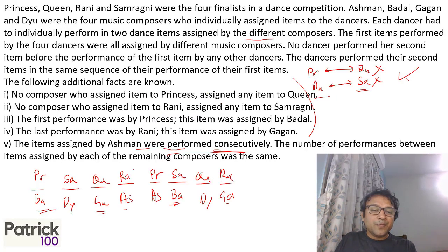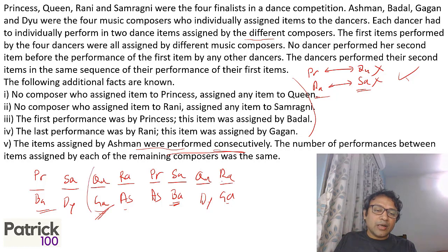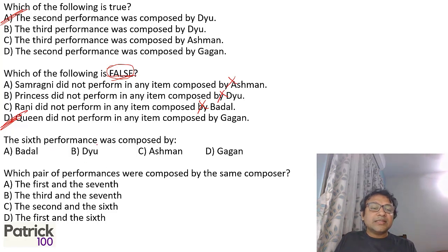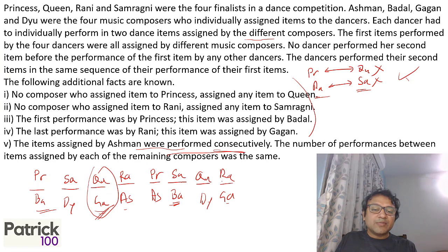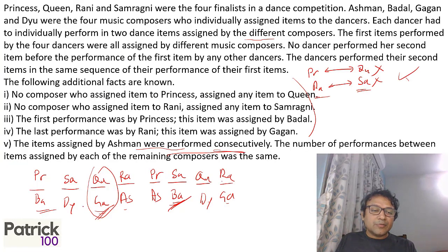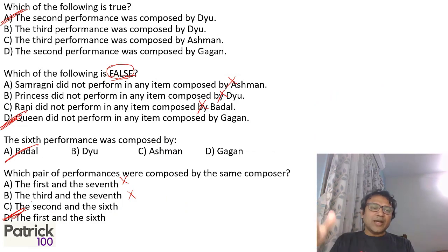Rani did not perform any item composed by Bartle — Bartle composed Princess and SA, not Rani, so that is also true. Queen did not perform any item composed by Gagan — but Queen and Gagan are paired here, so that statement is false. The fourth option D is the false statement. You should be very careful with false-type questions — they create confusion. The sixth performance was composed by Bartle, so option A. And the pair of performances composed by the same composer: first and sixth are both by Bartle, so option D is the answer. Once you get the sequence, you get the answers immediately.